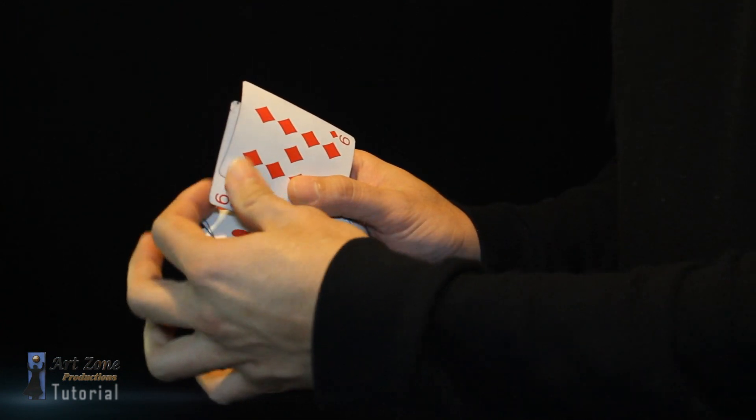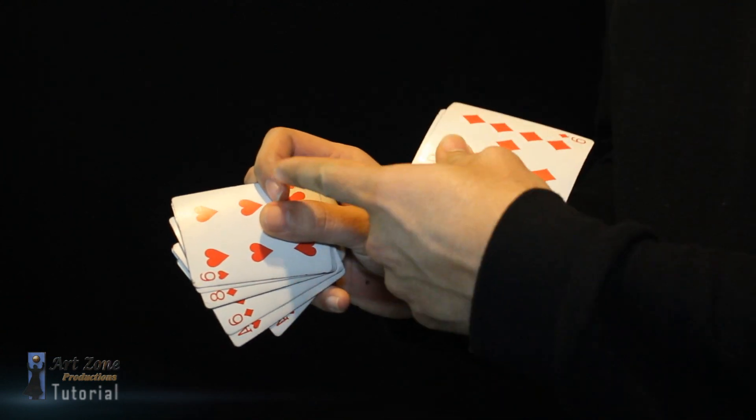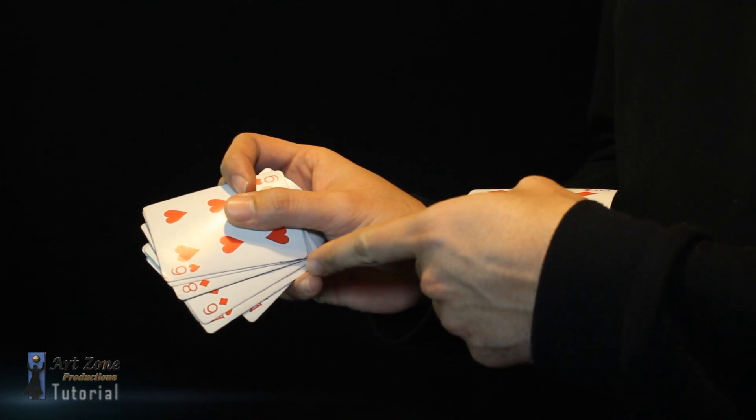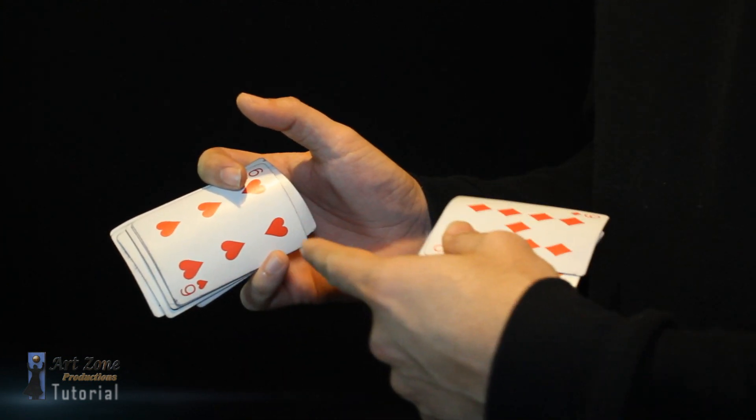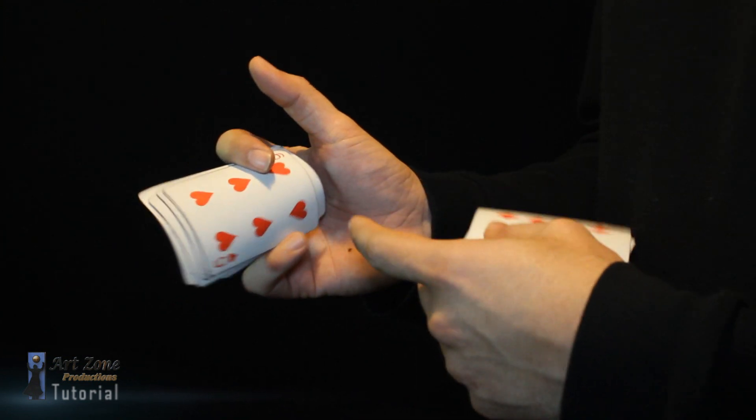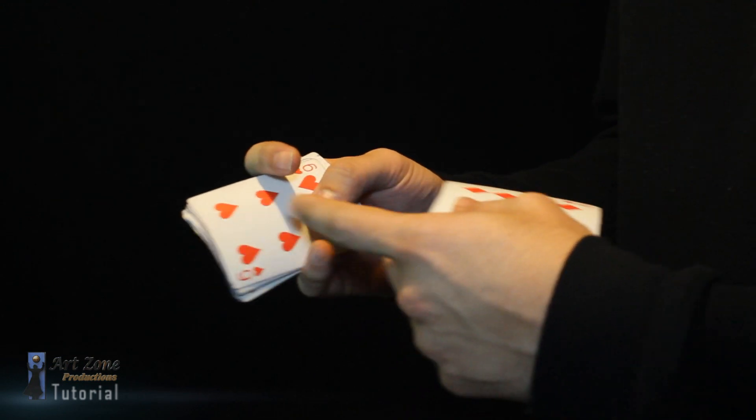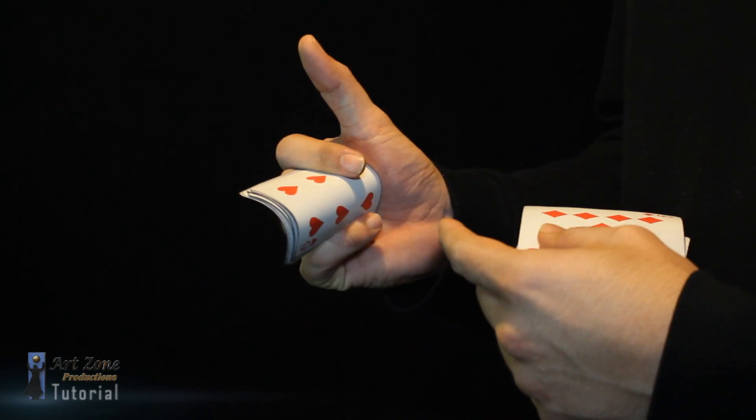These top two cards are gonna be the ones I throw away. The index finger over here is pushing against the pinky, so I'm squaring from the long side of the packet. To square from the short side, just bring these two fingers close to the base of the thumb.